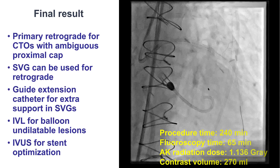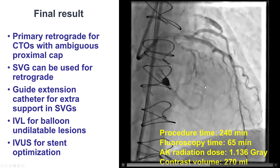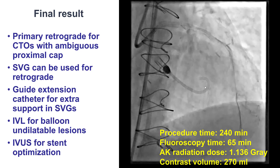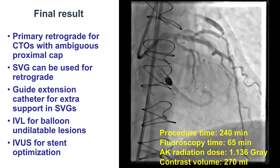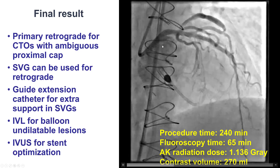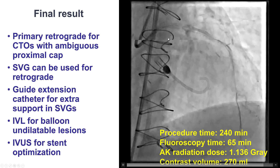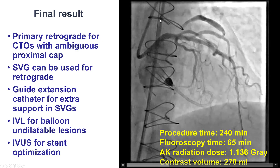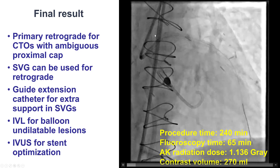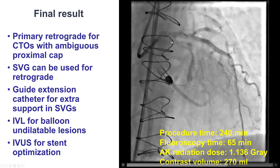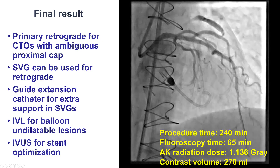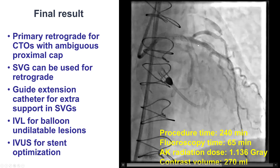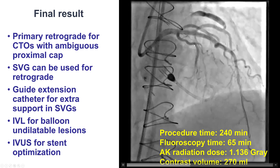This was the final result with good backflow and excellent flow into the LAD, as well as the Ramus and the circumflex. Multiple lessons from this case: vein grafts can be a very efficient and safe way to perform retrograde crossing of CTOs; a primary retrograde approach is indicated in patients with ambiguous proximal cap. Support can be poor when performing PCI through vein grafts, and using a guide extension upfront can help increase support and facilitate crossing. Intravascular lithotripsy can be very useful for calcified lesions, and use of intravascular imaging is critical to ensure good stent expansion. Thank you.